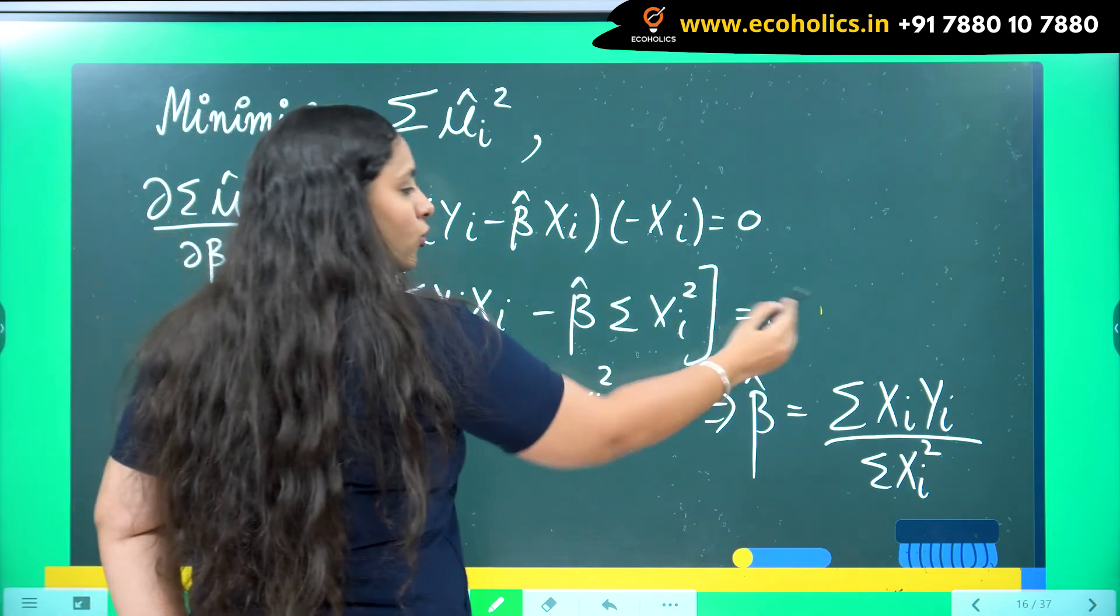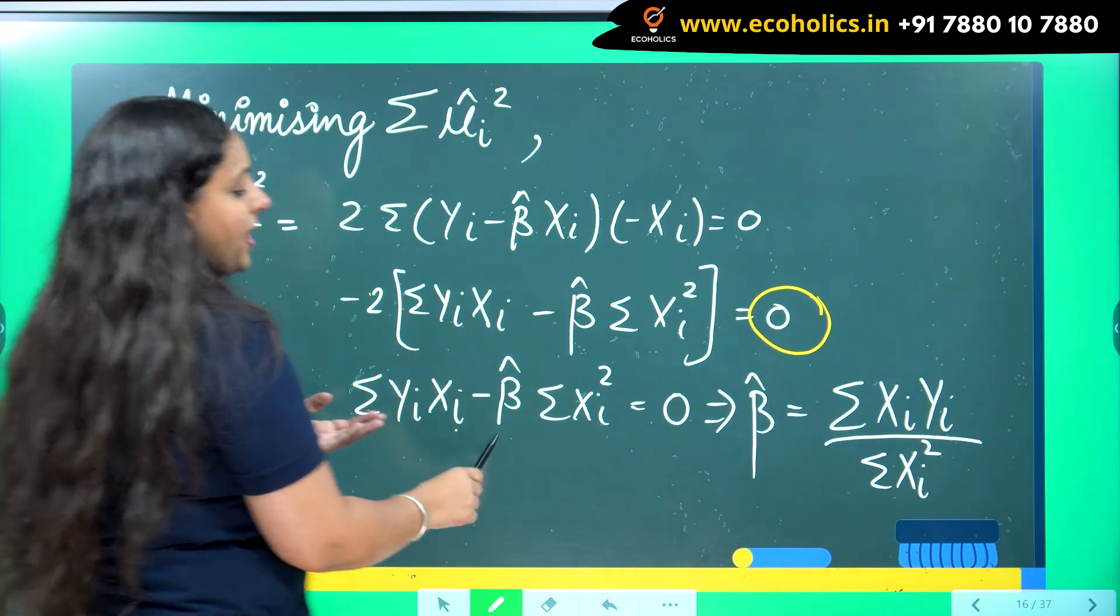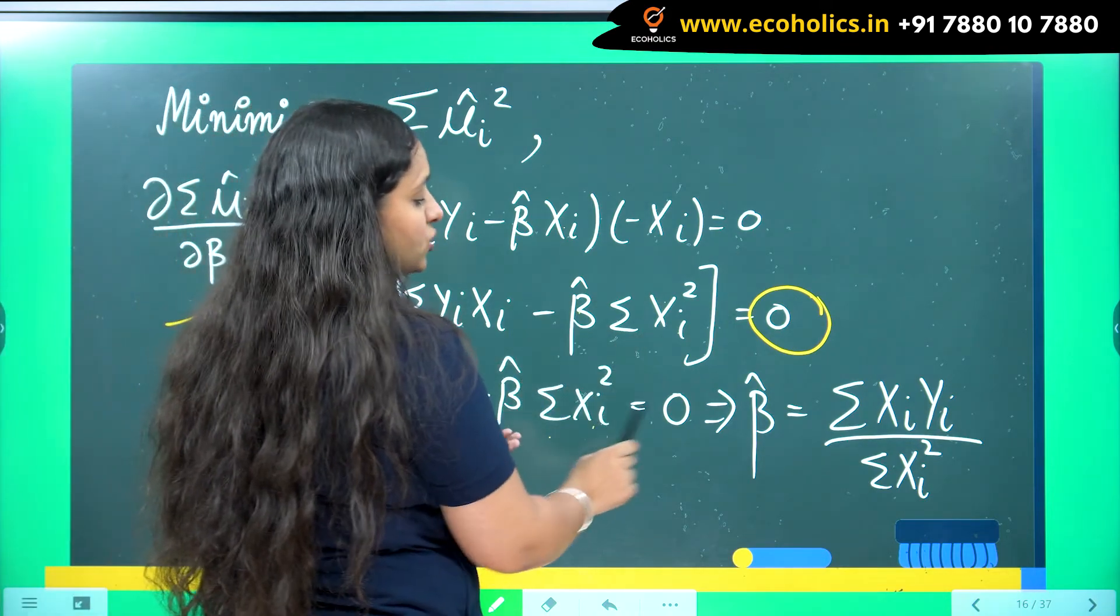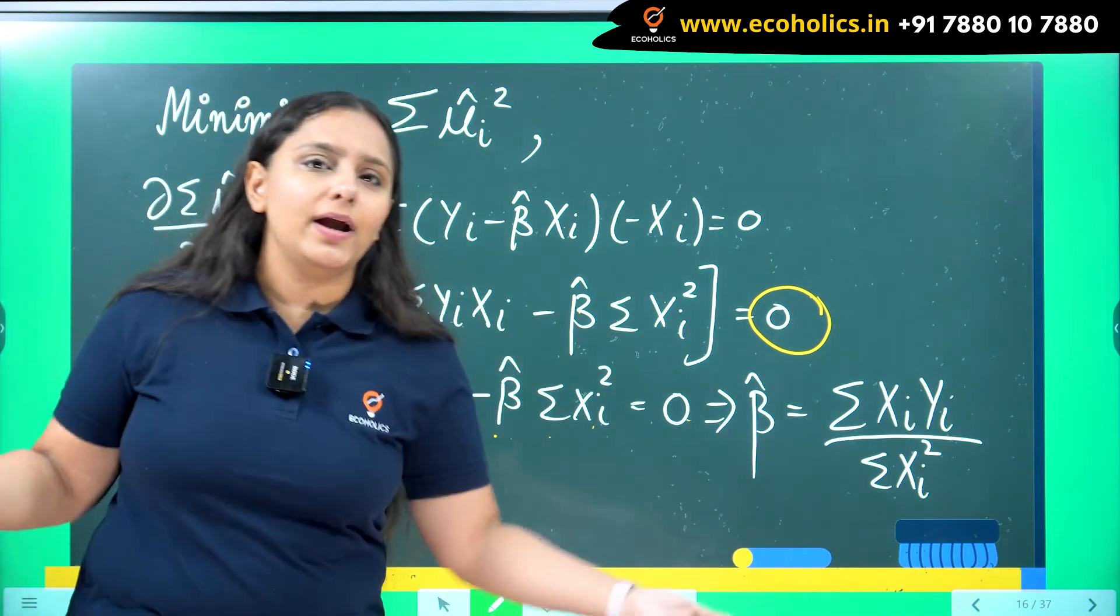Minus 2 if it goes to the other side, it will also become 0. So what I am left with is summation yi xi minus beta hat summation xi square equals to 0. Now just one more step and your answer will be here.